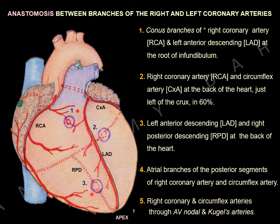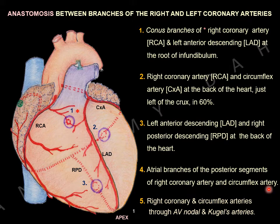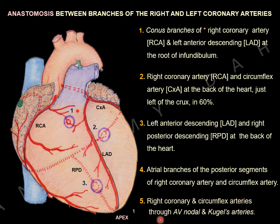The fourth and fifth anastomoses are not shown in this diagram. They are the atrial branches of the posterior segments of the right coronary artery and circumflex arteries — atrial ventricular branches that will anastomose. Another one is branches coming from the right coronary artery and circumflex artery through the atrioventricular nodal artery, also called Kugel's artery. They anastomose there.